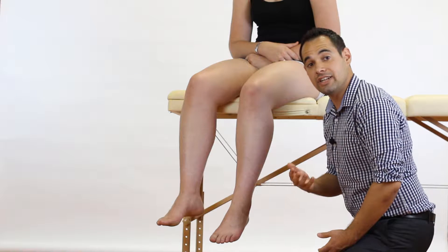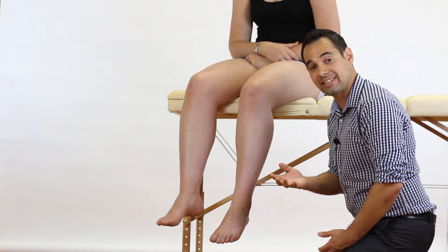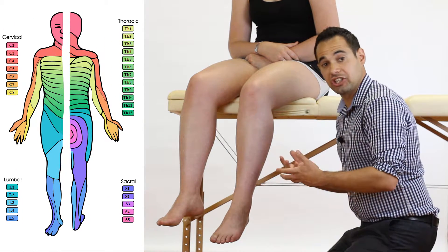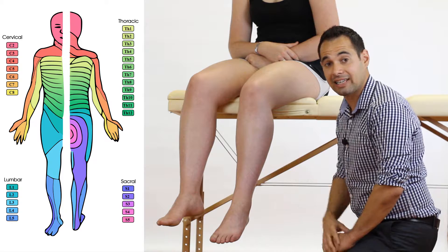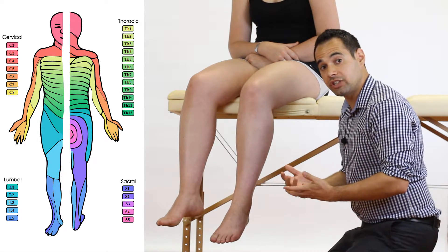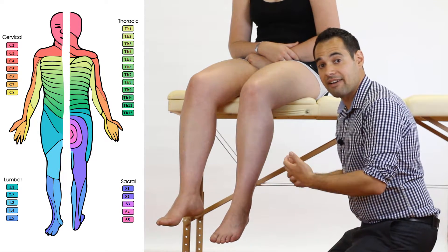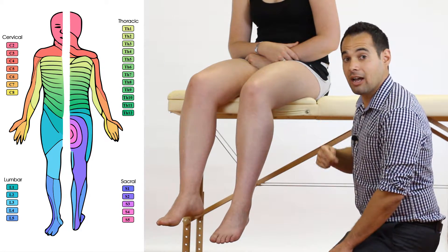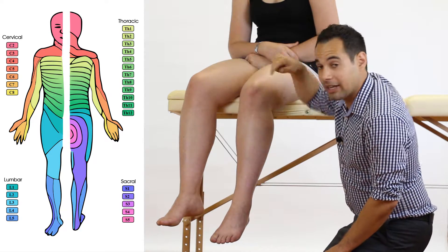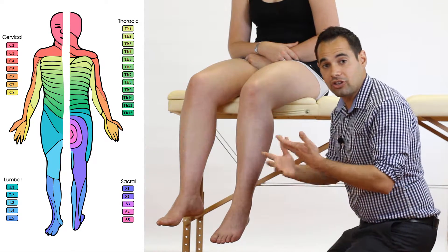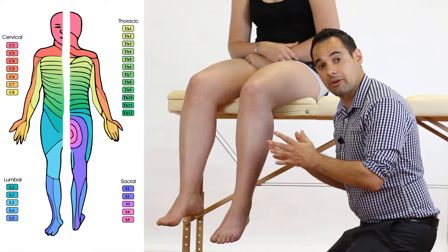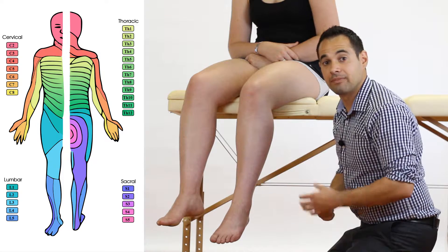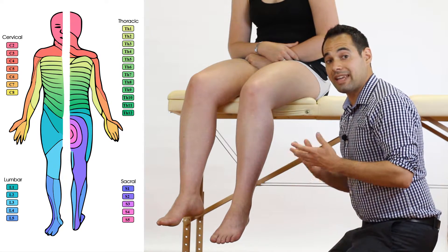So now we are going to be taking you through the areas that you need to test as part of your lower limb dermatomal testing. I am going to be in the position I am in so that you can see everything clearly on the camera, and you will see me alternating between the right and left legs when showing you the different dermatomes. For example, I am going to show you the L2 dermatome on the left leg, but the L3 dermatome on the patient's right leg — simply so that you can see everything clearly. The dermatomes on the right side are exactly the same as on the left. Let's go through the dermatomes together, starting with L2.